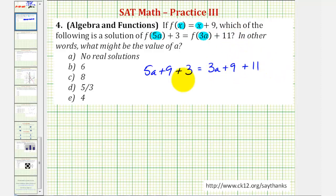So now we'll simplify each side and solve for a. Looking at the left side, nine plus three is 12. So we'll have five a plus 12 equals three a. Nine plus 11 is 20, so plus 20.